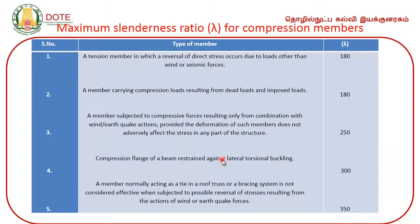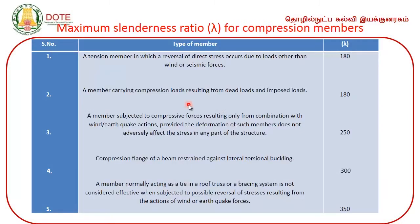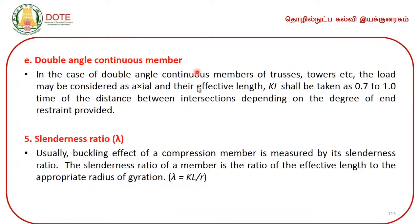To summarize, for design of compression members we have covered: the definition and types of compression members, the parameters governing failure — flexural buckling, local buckling, flexural-torsional buckling — and the concepts of actual length, effective length, and slenderness ratio, which is the critical factor in compression member design. With this, the session is over. Thank you.